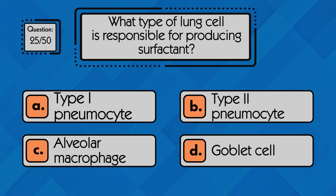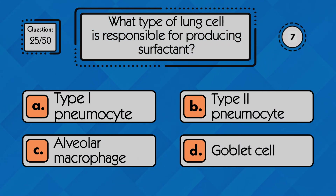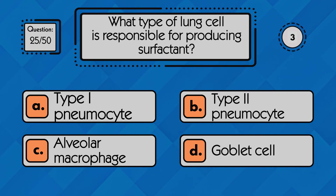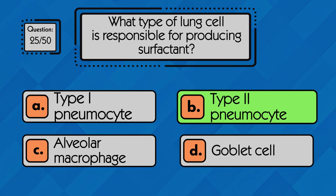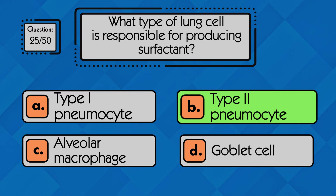What type of lung cell is responsible for producing surfactant? Type II pneumocytes produce surfactant, a substance that helps keep the alveoli open and stable during breathing.